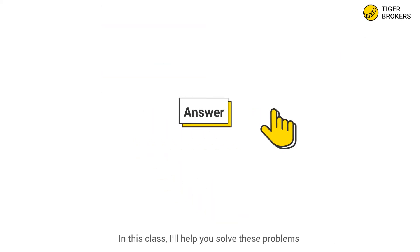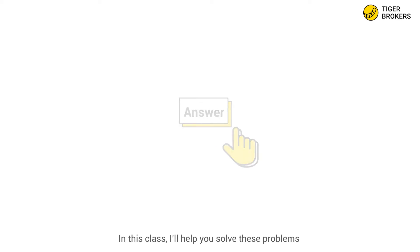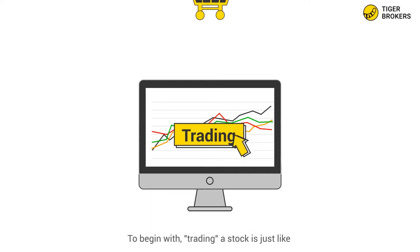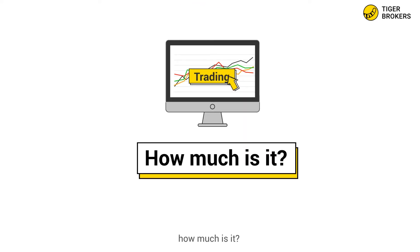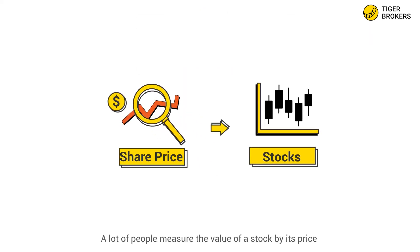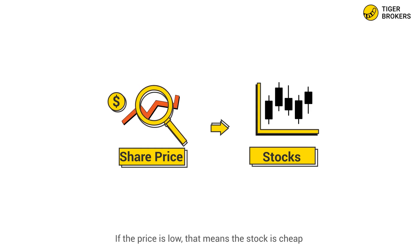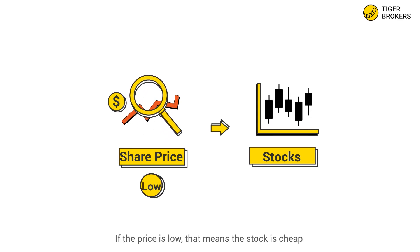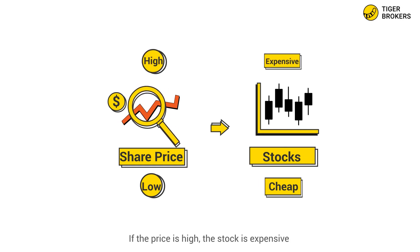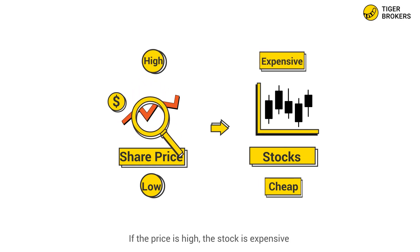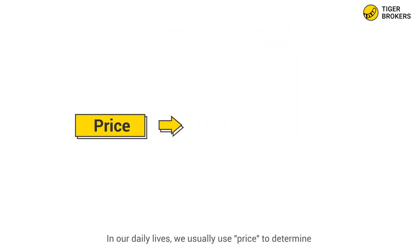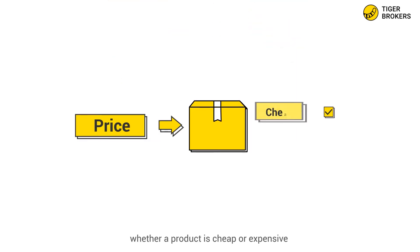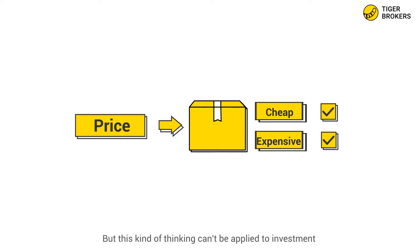In this class, I'll help you solve these problems. To begin with, trading a stock is just like buying a product. The first thing you need to know is: how much is it? A lot of people measure the value of a stock by its price — if the price is low, the stock is cheap; if the price is high, the stock is expensive. But is this really the case? In our daily lives, we usually use price to determine whether a product is cheap or expensive, but this kind of thinking can't be applied to investment.